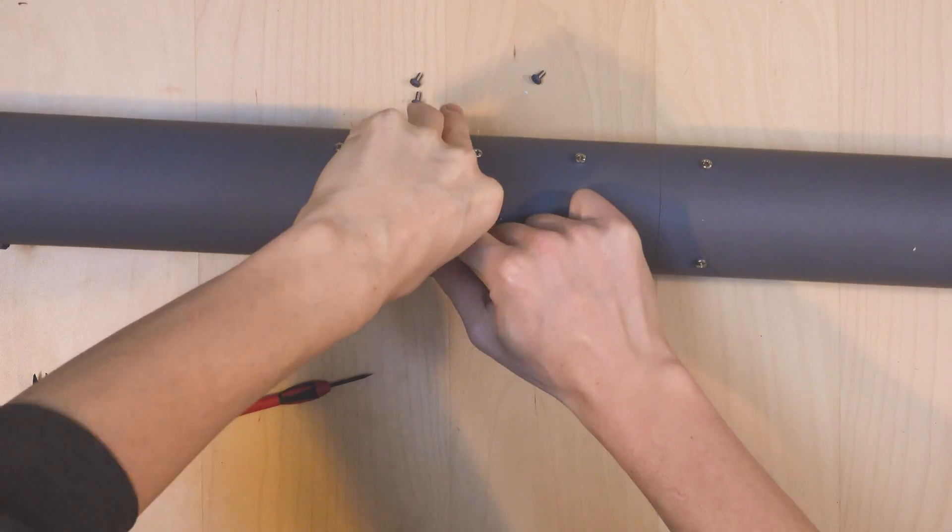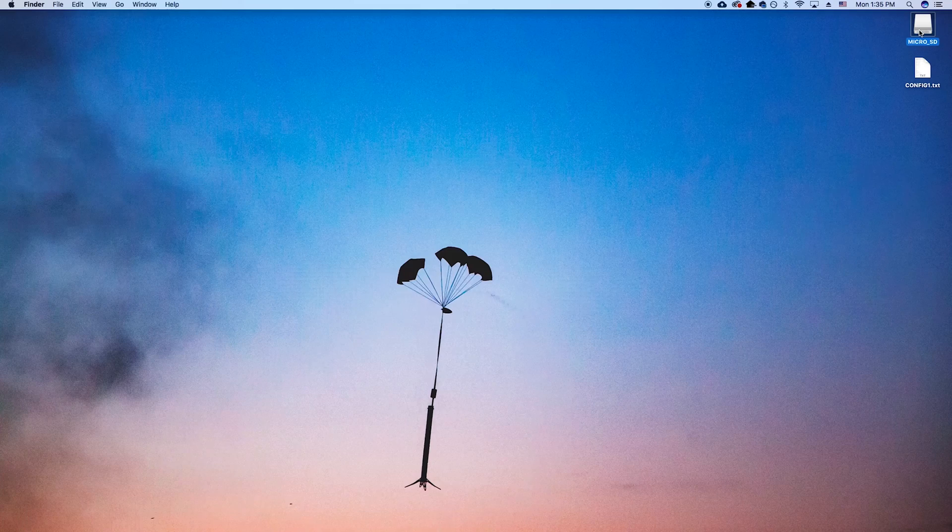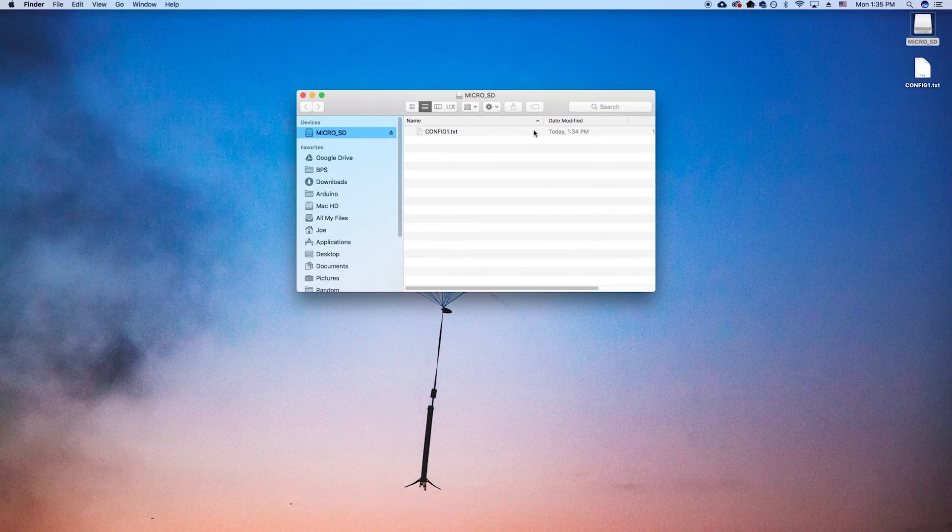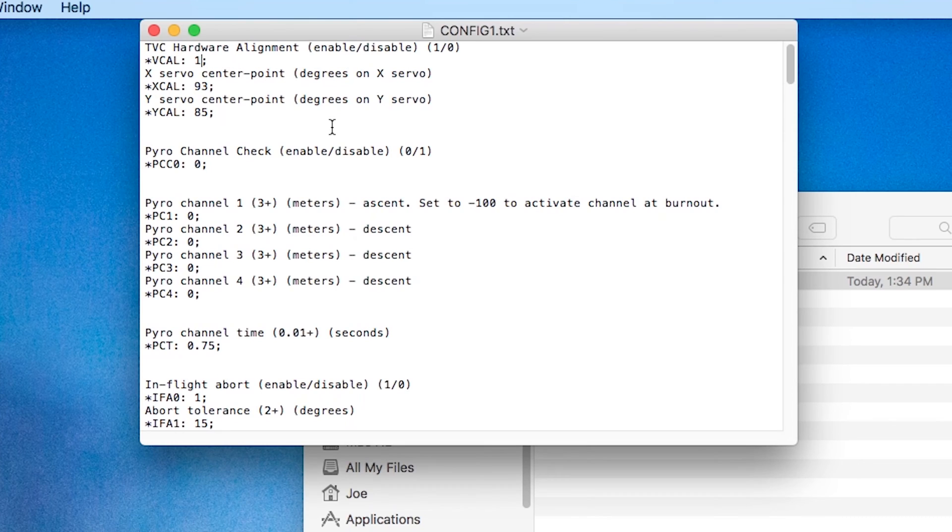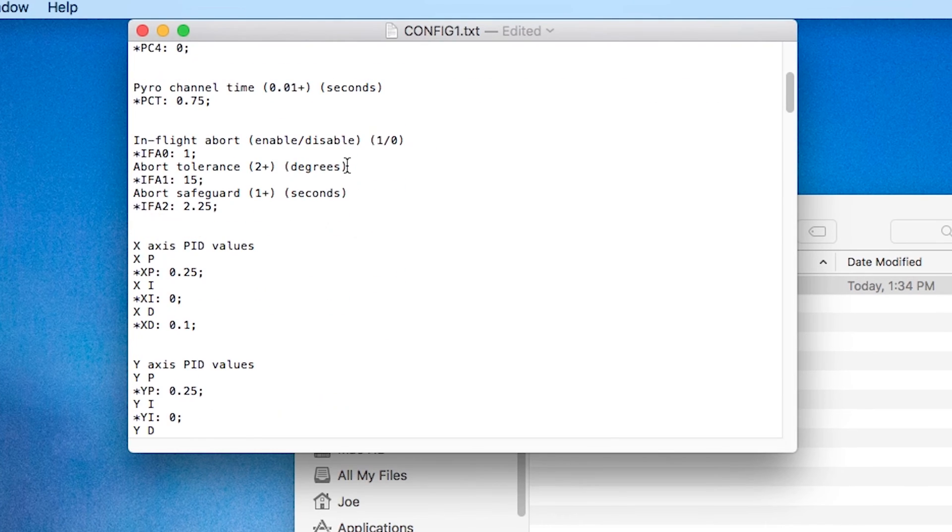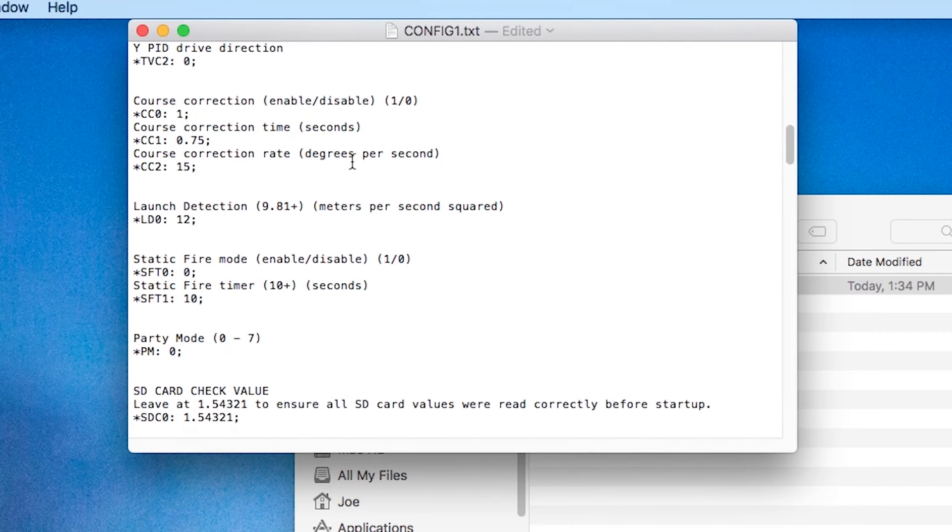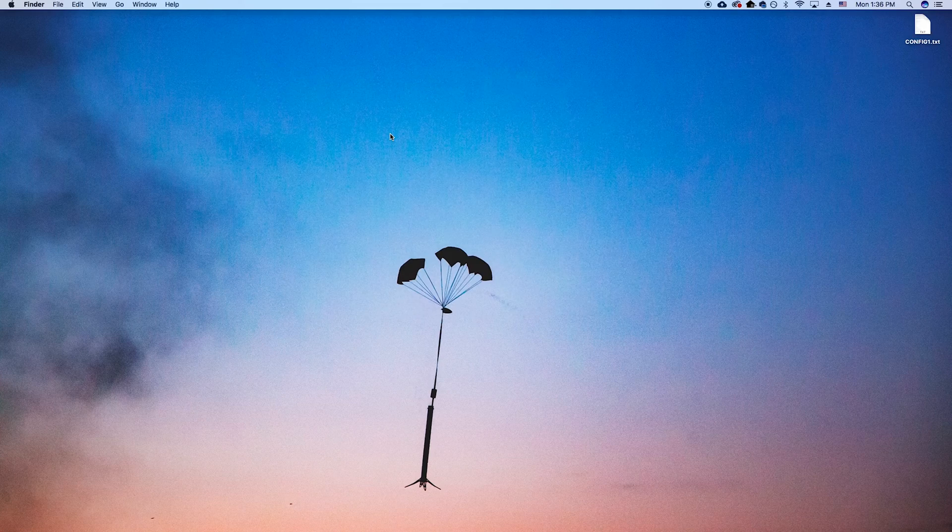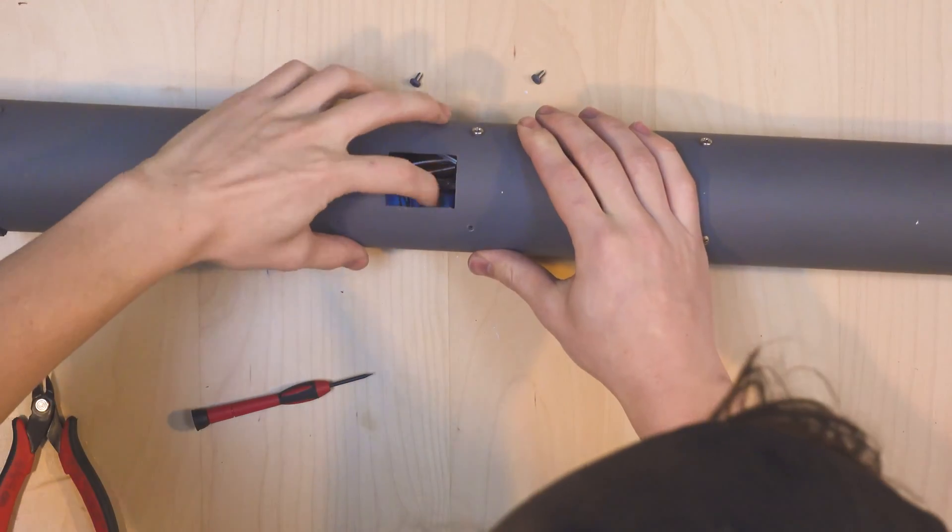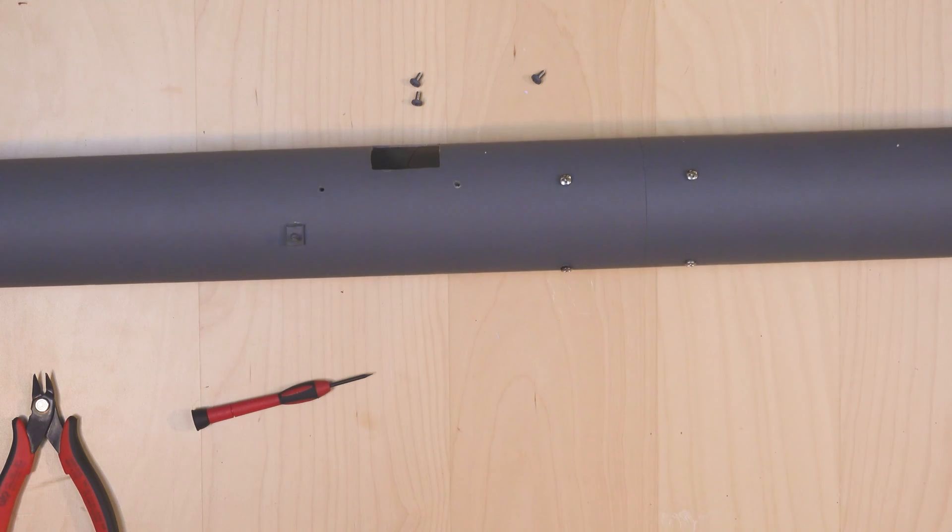It's time to configure the rocket for an ejection test. Remove the microSD card, and open up the configuration file on your computer. With the file open, we first need to turn off TVC hardware alignment by switching that 1 to a 0. Then we'll scroll down to the bottom of the settings and turn the static fire mode on by switching that 0 to a 1. You'll note that the timer here is set for 10 seconds, which is how long the vehicle will count down for until firing that pyro. Save the file, eject the microSD card, and put it back into signal alpha. After the SD card is inserted, do not turn the rocket back on. We need to wait till we go outside to do this because it is now armed.